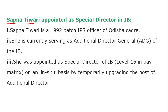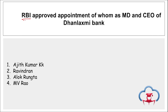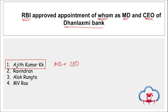Nalin Prabhat is a 1992 batch IPS officer of the Andhra Pradesh cadre, currently serving as Additional Director General in CRPF in Jammu and Kashmir. Sapna Tiwari is a 1992 batch IPS officer of the Odisha cadre, currently serving as Additional Director General of the IB. RBI approved the appointment of Ajit Kumar KK as Managing Director and CEO of Dhanlaxmi Bank. He will be succeeding JK Shivan, whose term ended on 29th January 2024.